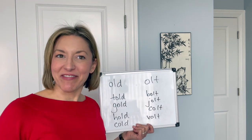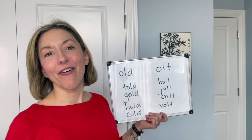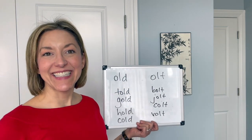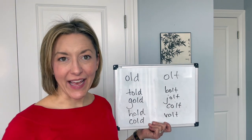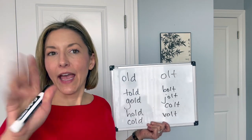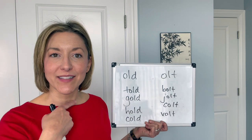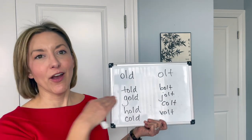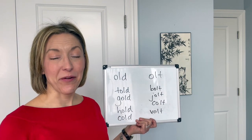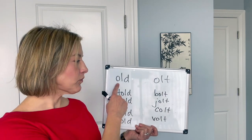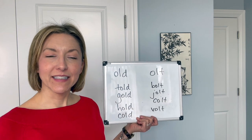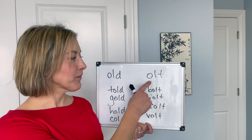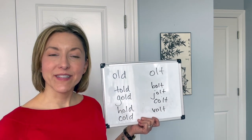It looks kind of funny because I'm going really slowly — it won't look so funny in a word. Then we end with that D: the tip of the tongue touches the back of your top front teeth, air puffs out, voice box is on and moving for the D. Same position, voice box is off and not moving for the T. Let's try: old, old, old.